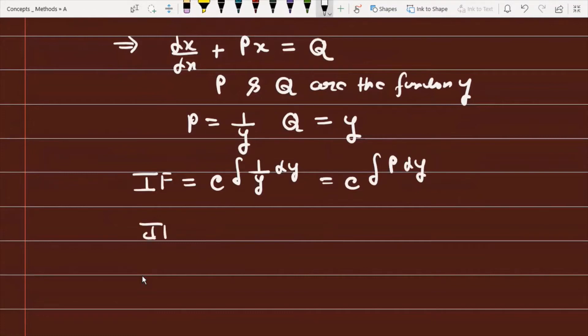So IF = e^(ln y) = y, because e^(ln x) = x where the conditions are satisfied. Thus, the integrating factor is finally y.